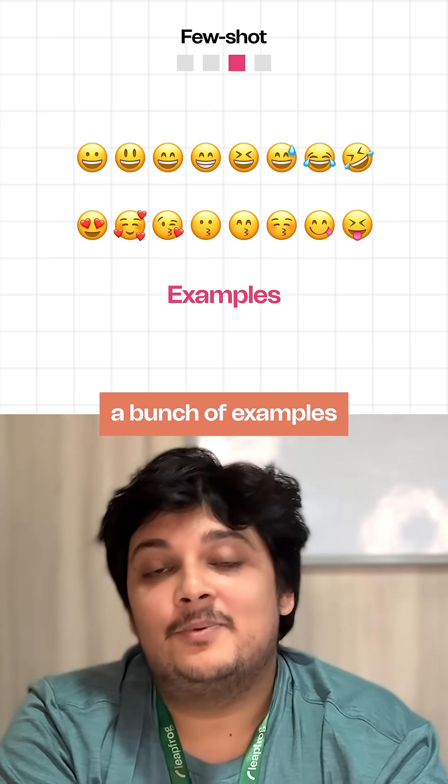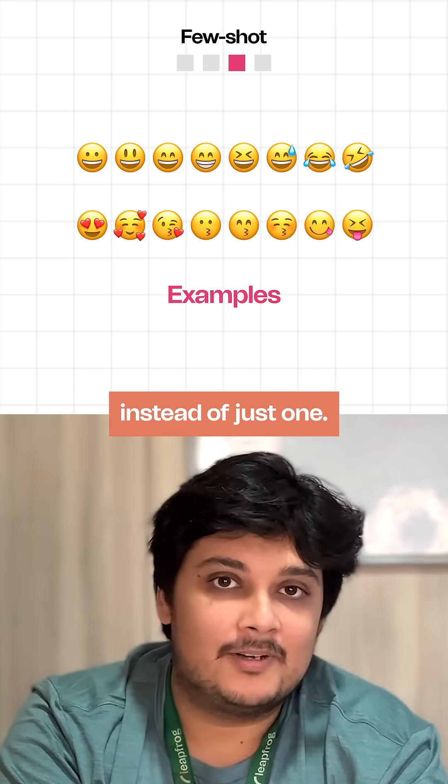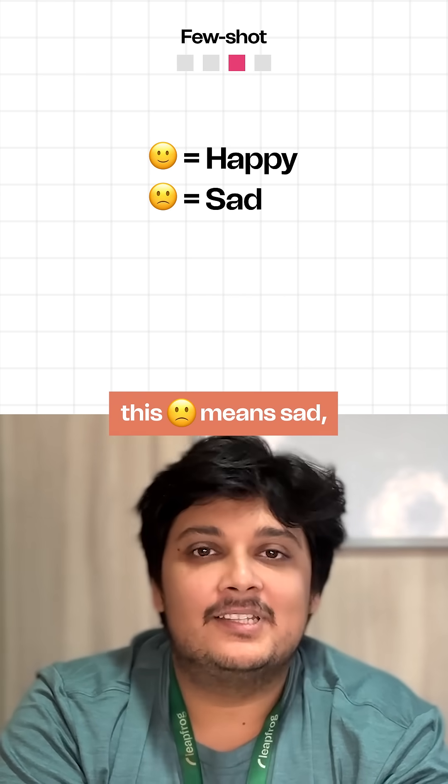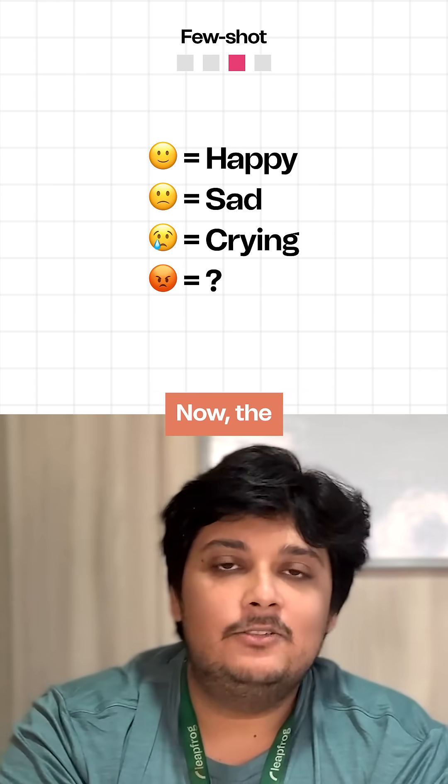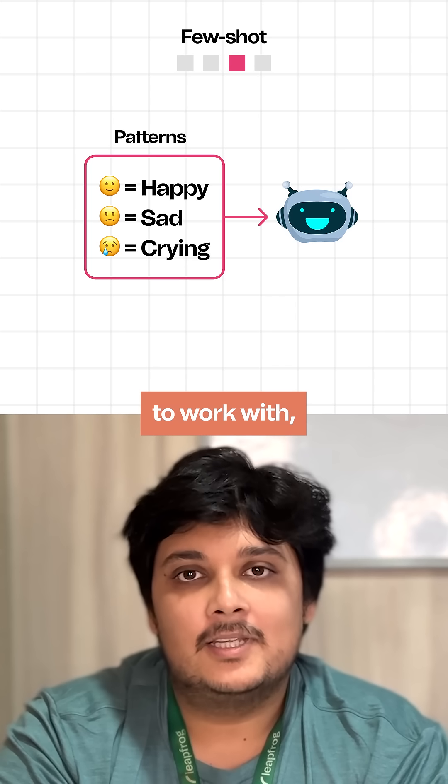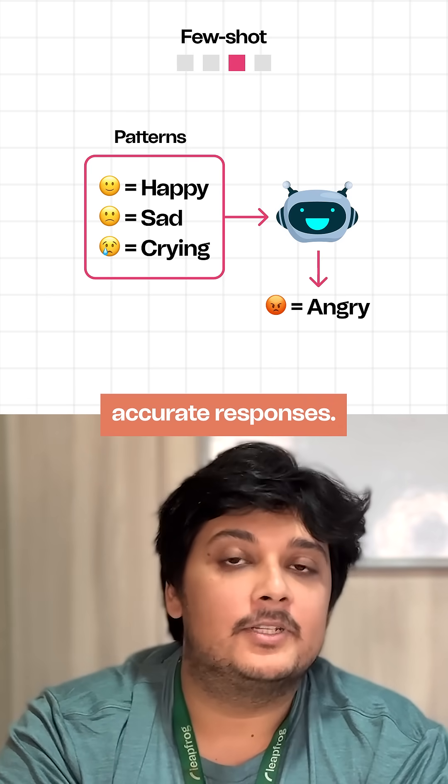Few-shot prompting is similar. You offer a bunch of examples instead of just one. So if this emoji means happy, this means sad and this is crying, what about this? Now the AI has more patterns to work with. This will help it make more accurate responses.